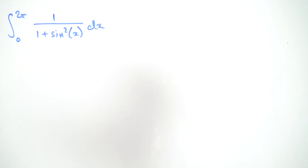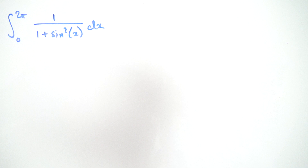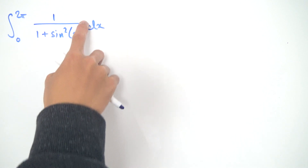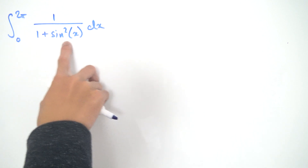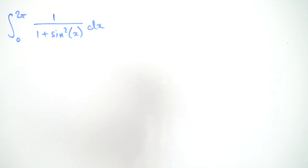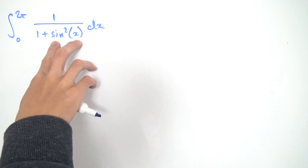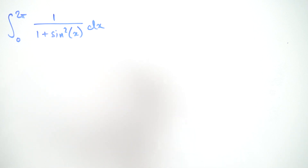Greetings everybody, and today we're going to be using complex analysis to evaluate this trigonometric integral. That's the integral from 0 to 2π of 1 over 1 plus the sine squared of x. We're going to be using complex analysis, so it would be nice if we can turn this sine into its complex exponential form somehow.